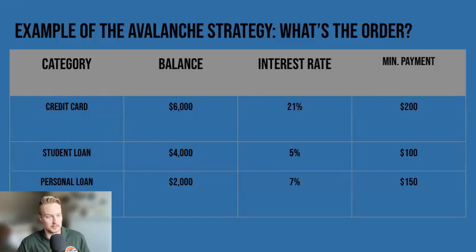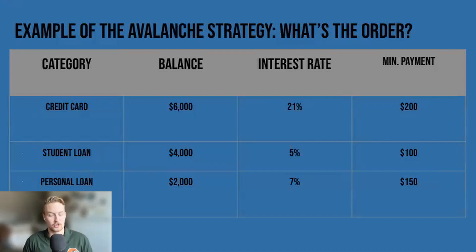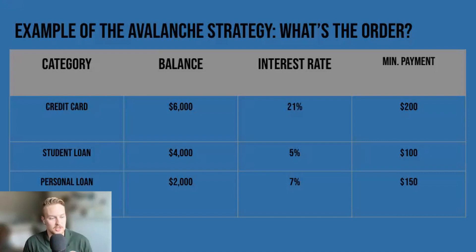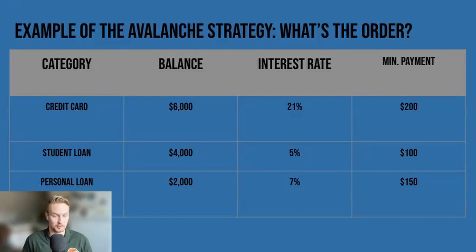Let's do a quick example with some real numbers. Here's a list of some debts. We've got a credit card with a balance of $6,000, an interest rate of 21%, and a minimum payment of $200. We've got a student loan with $4,000, an interest rate of 5%, and a minimum payment of $100. Then we have a personal loan with a balance of $2,000, an interest rate of 7%, and a minimum payment of $150.